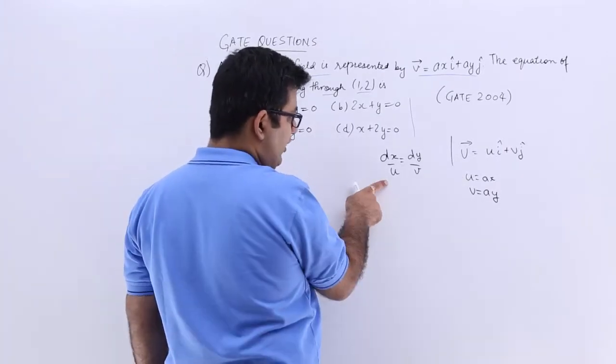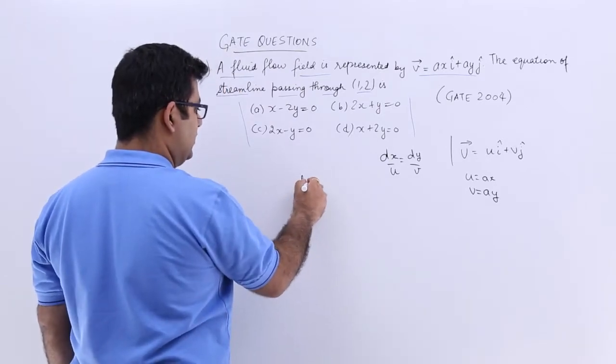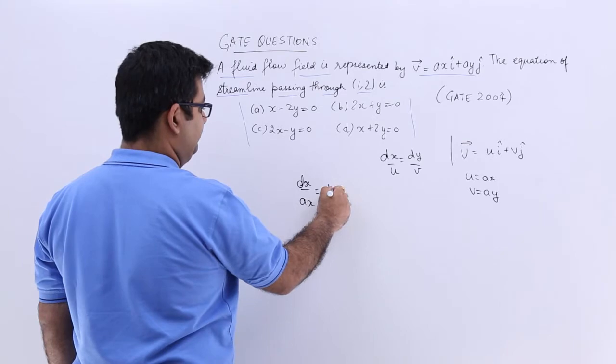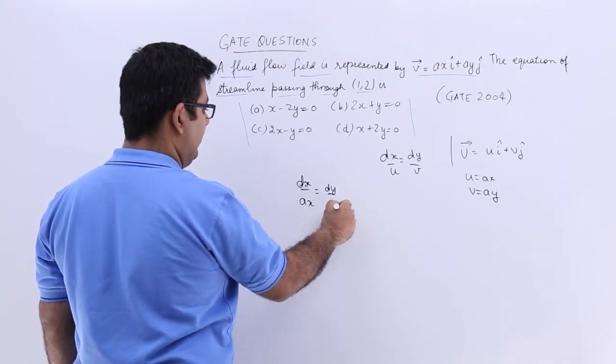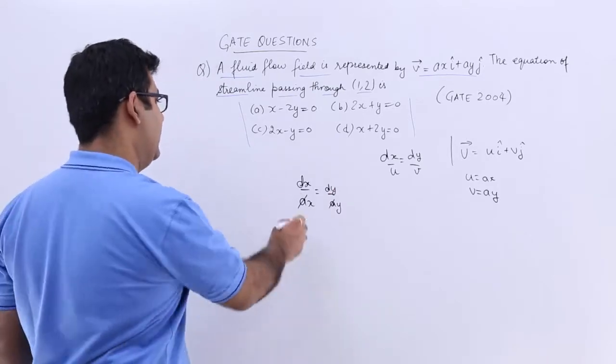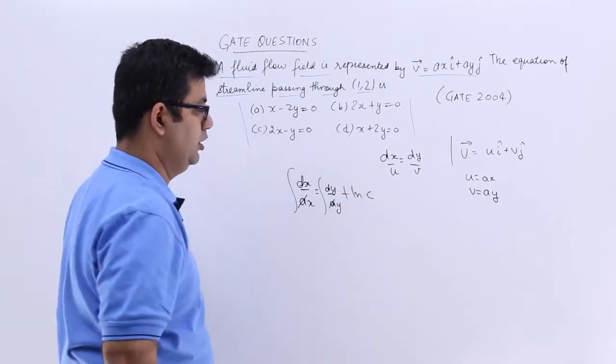So I will put u equal to ax over here and v equal to ay over here. So you will get dx upon ax is equal to dy upon ay. You can strike off a from both sides, and then we will integrate and add one constant log of c.